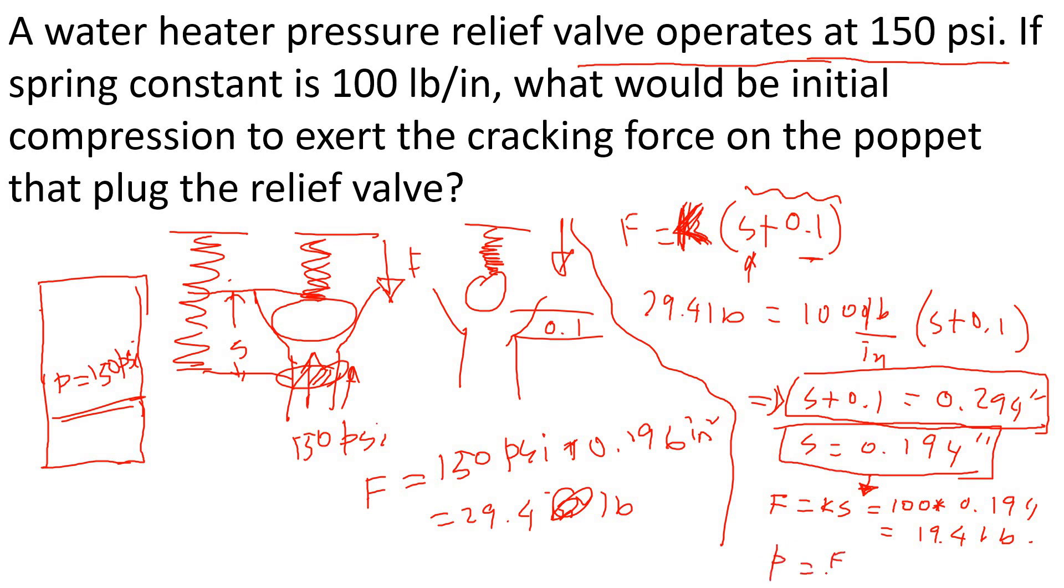If you want to convert that to pressure, simply force equals F by area. 19.4 divided by area 0.196, so that becomes about 99 psi.